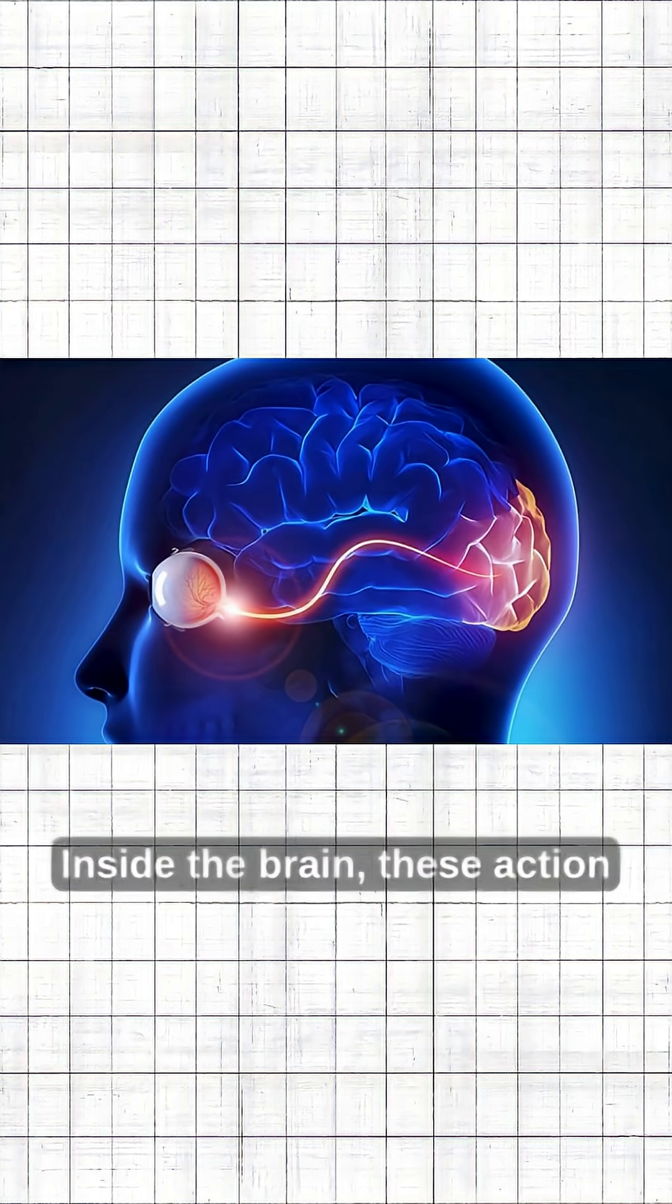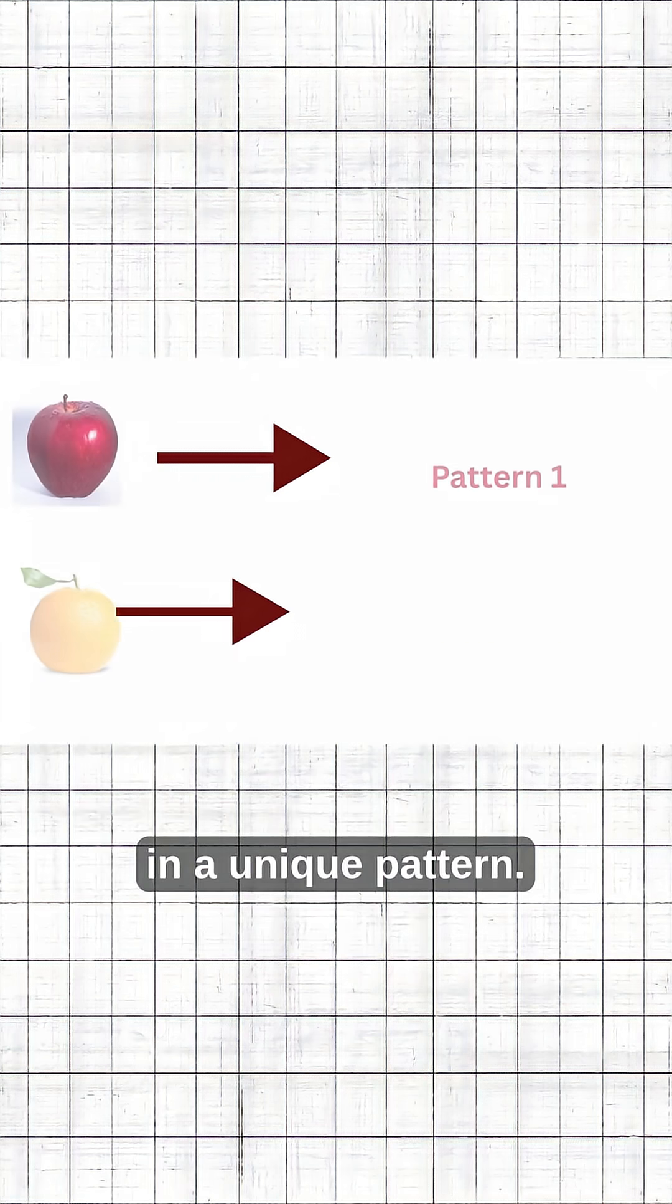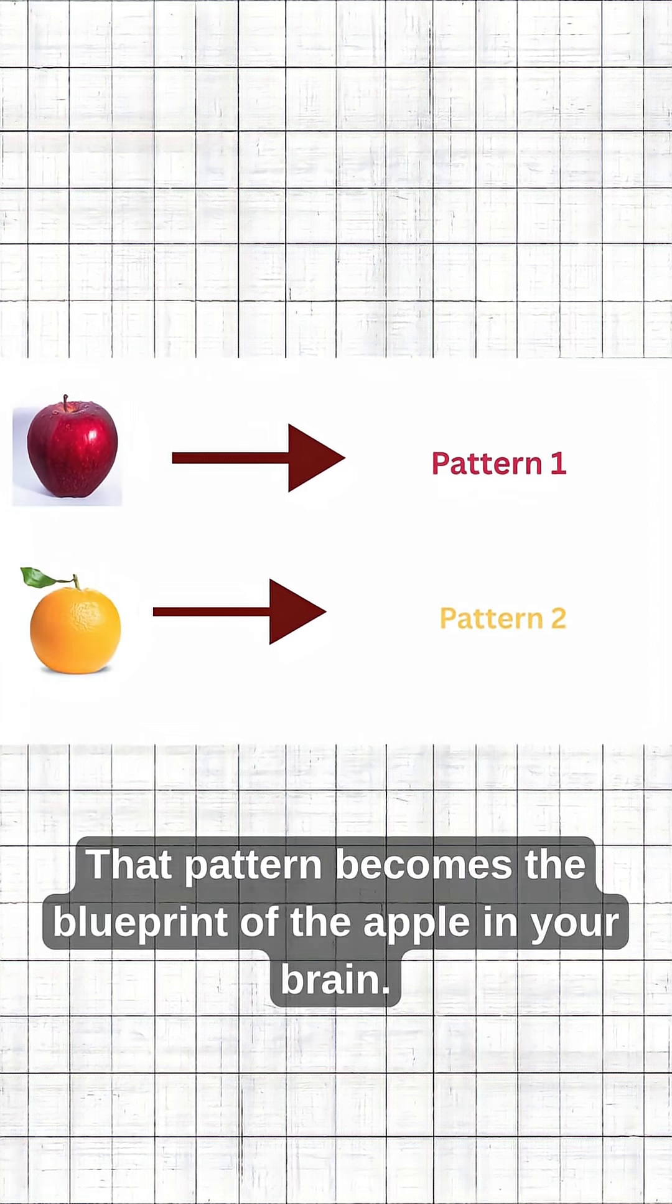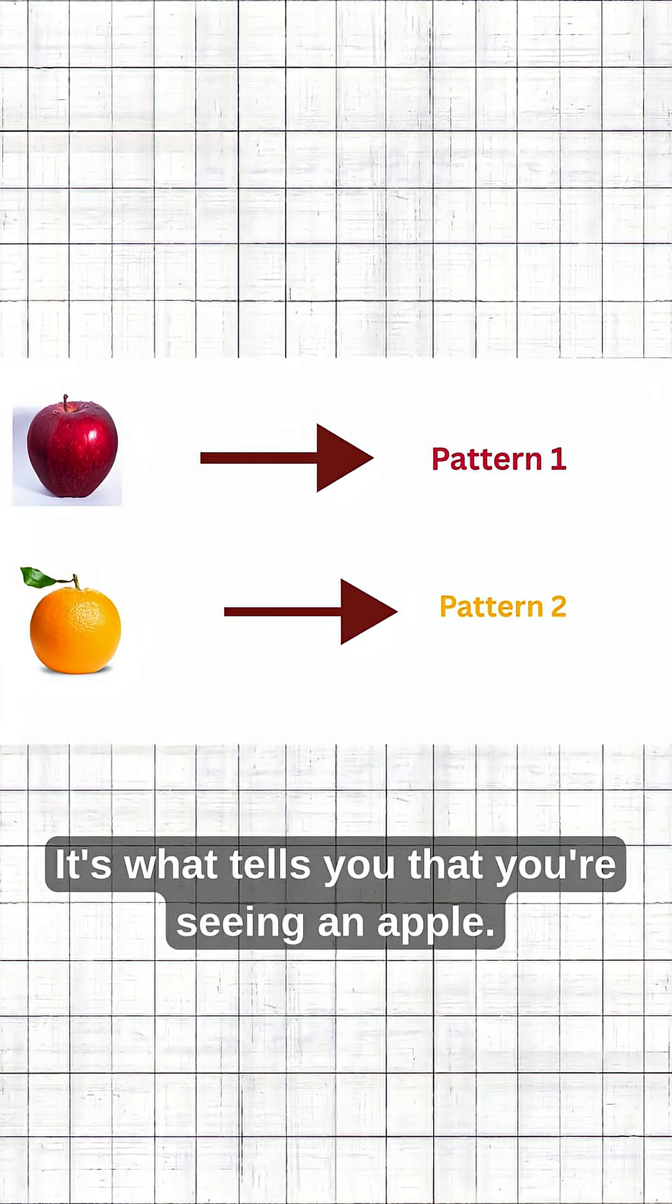Inside the brain, these action potentials activate a specific group of neurons in a unique pattern. That pattern becomes the blueprint of the apple in your brain. It's what tells you that you're seeing an apple.